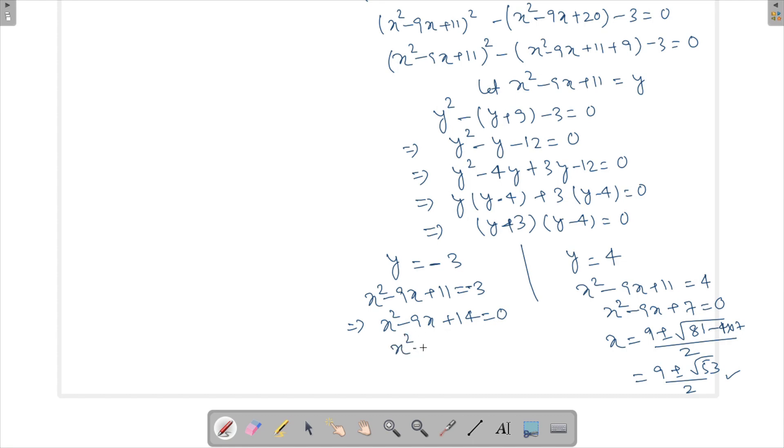This can be factorized and can be written as x² - 2x - 7x + 14 = 0, and we can write this as x - 2 and this can be -7 into x - 2 = 0, or x is taken common here so this is going to be (x - 7)(x - 2) = 0. Or you could say that x is either 2 or 7.